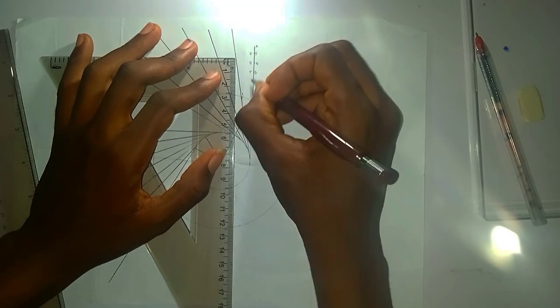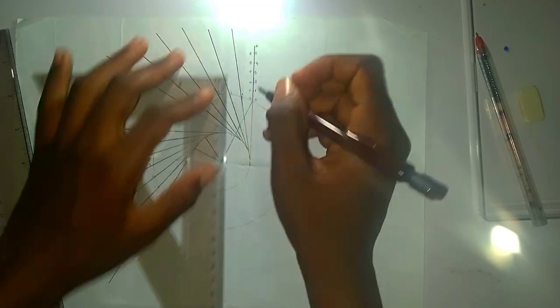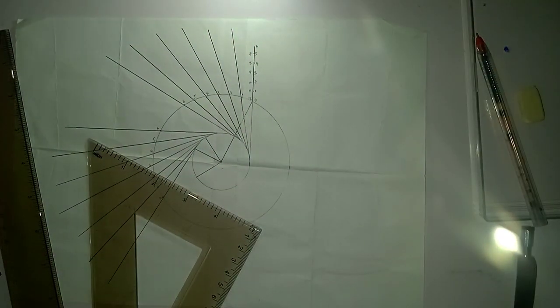I'm just numbering it from 1 to 6. Having done that, here's what we'll do next.